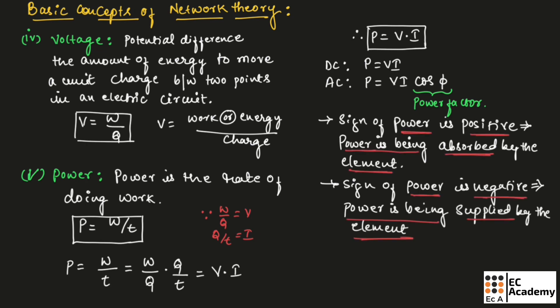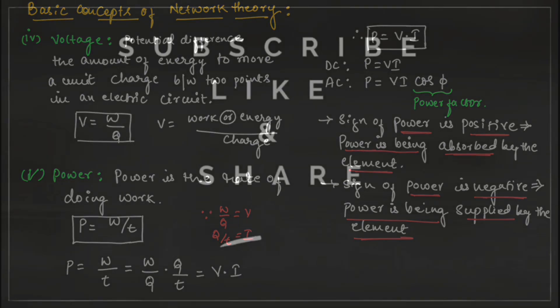Generally, we can have positive power or negative power. If the sign of power is positive, the element is absorbing power. If the sign of power is negative, the element is supplying power. You need to remember these points. This is about some basic concepts of network theory. Hope you have understood the topic. Thank you.